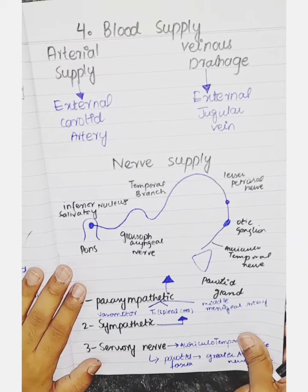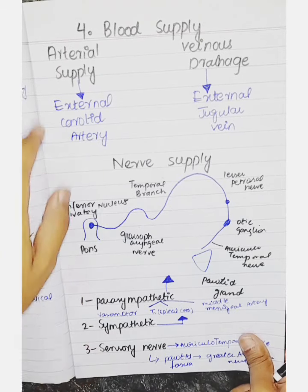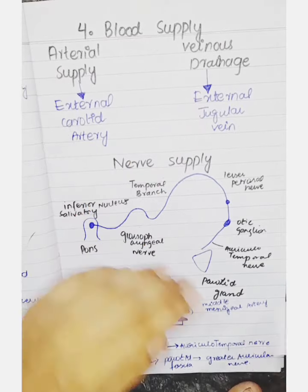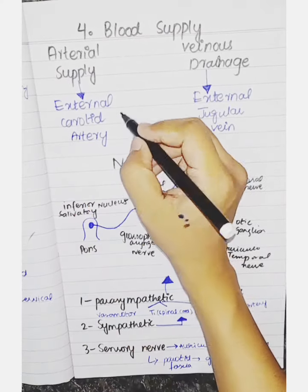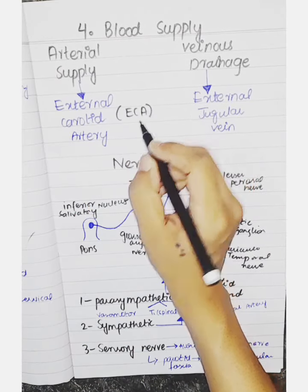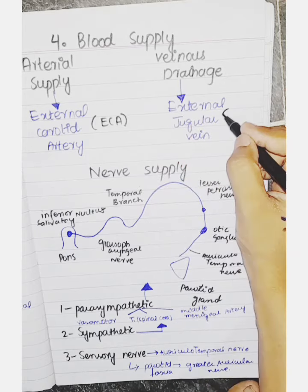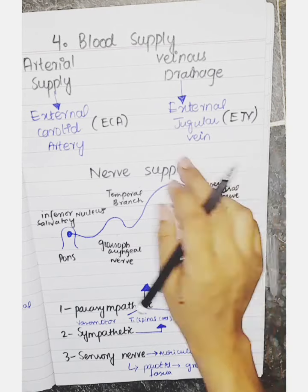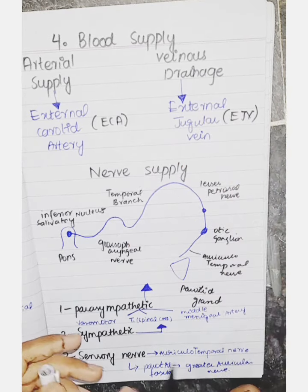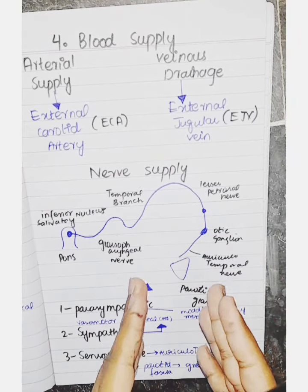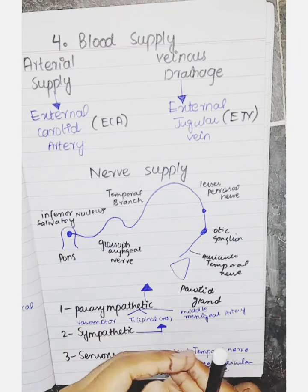The blood supply of the parotid gland has two main components: arterial supply and venous drainage. The arterial supply comes from the external carotid artery (ECA), and the venous drainage is via the external jugular vein (EJV). This is quite simple.